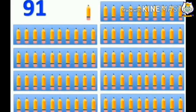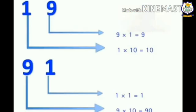Now what if we change the places of 1 and 9? That means it will become 91 — 9 groups of 10s and 1 other pencil. You might be asking that 19 and 91 have the same digits, so how are they different? In 19, 9 is at the place of 1s and 1 is at the place of 10s.